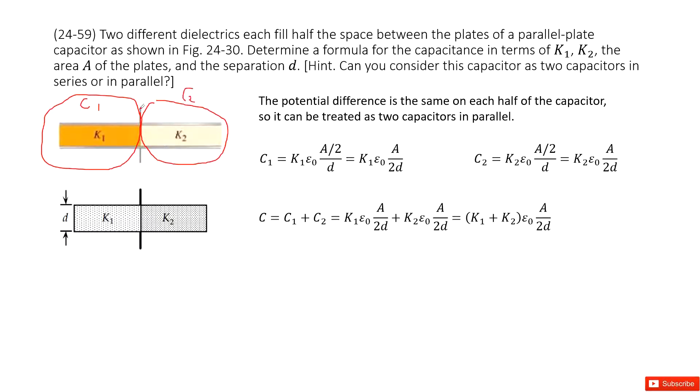If we connect it with the battery, you can see the voltages are equal for capacitor 1 and capacitor 2. So we can consider capacitor 1 and capacitor 2 in parallel connection because the voltages are equal.